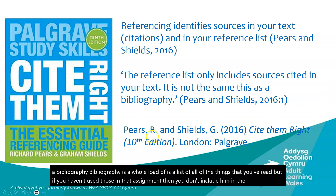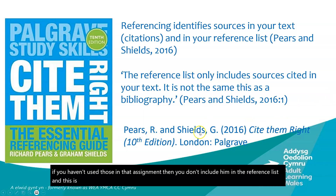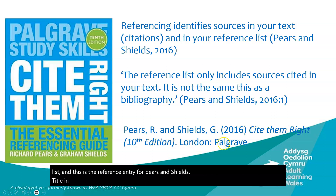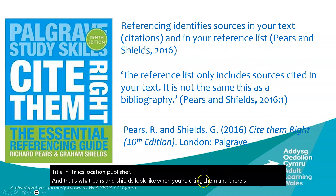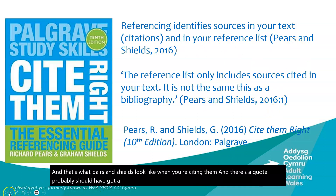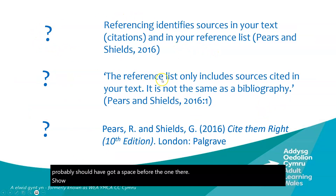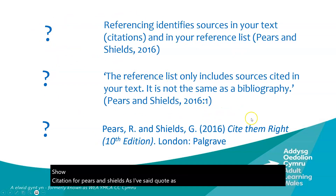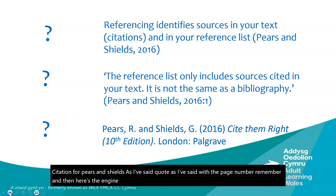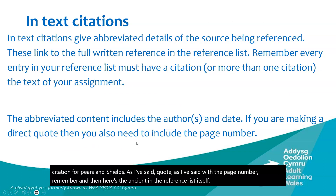Here is the reference entry for Pears and Shields: year, title in italics, location, publisher. That's what Pears and Shields looks like when you're citing them, and there's the quote — remember to include the page number. Here's the entry in the reference list itself.